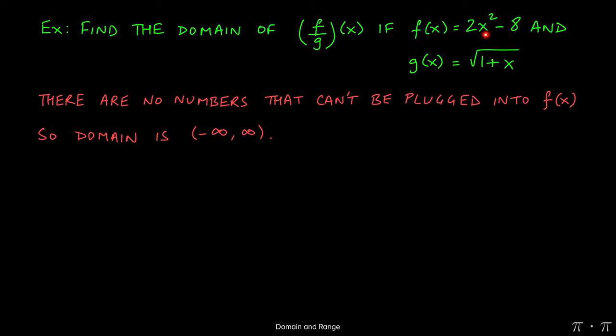You can't think of a number that you can't multiply by itself, and then whatever answer you get, you multiply by 2, and then you take 8 away from that new number. This will always be possible with any x value that you choose. So that's why we say that the domain for f of x is from negative infinity to positive infinity.